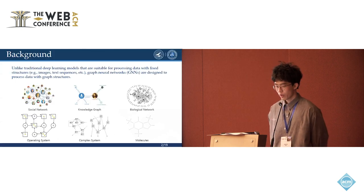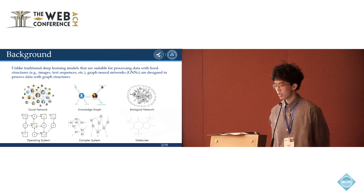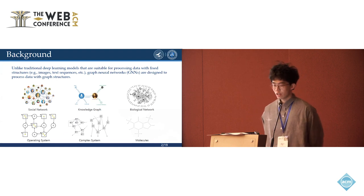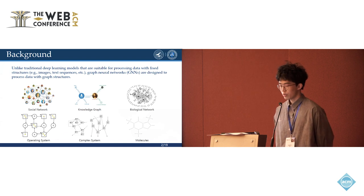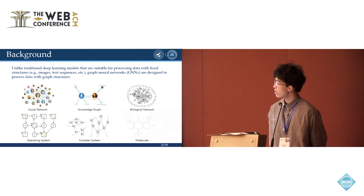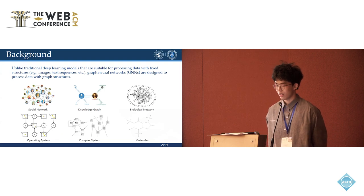Graph data is everywhere in our real life and on the website, such as trade flows, social networks, and so on. Unlike common deep learning models that are suitable for processing data with fixed structures like image or text,